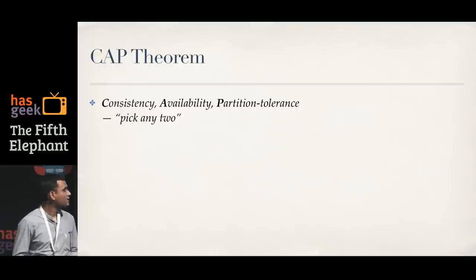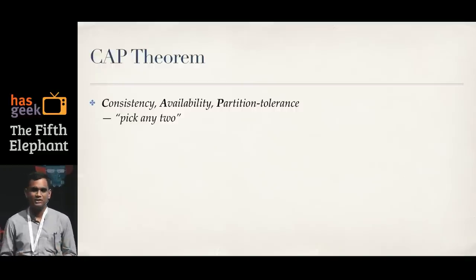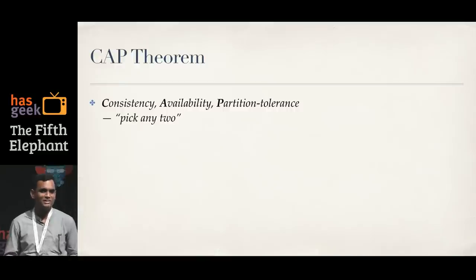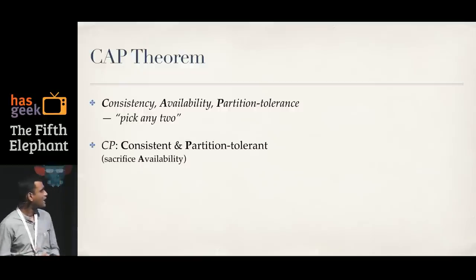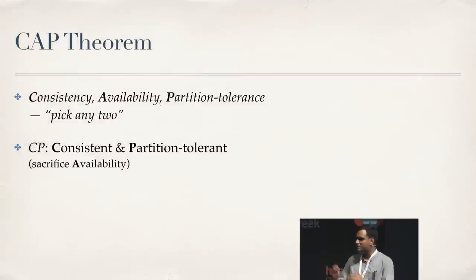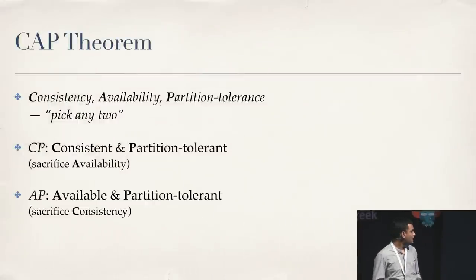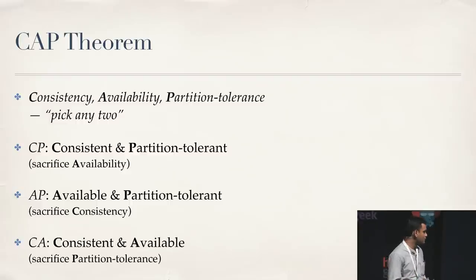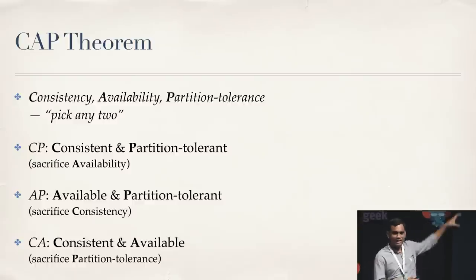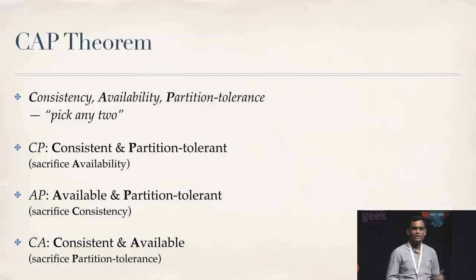CAP is normally stated as: consistency, availability, partition tolerance — pick any two. If you pick consistency and partition tolerance, you sacrifice availability — that's a CP system. Similarly, you have an AP system choosing availability and partition tolerance but sacrificing consistency. Or finally a CA system choosing consistency and availability but sacrificing partition tolerance. I'll go through each of these and argue about their usefulness.